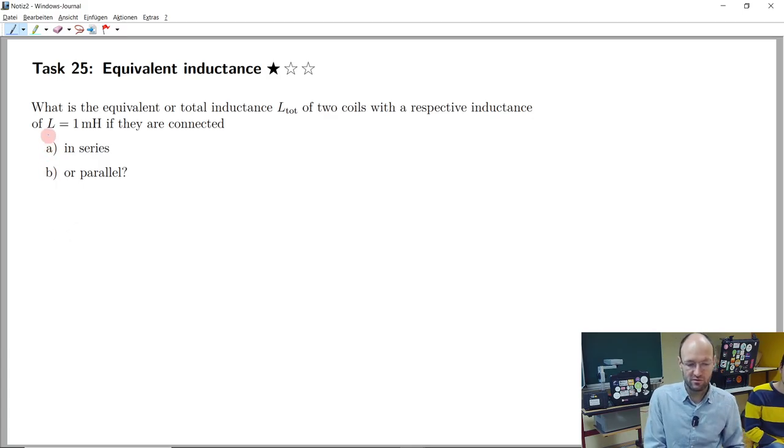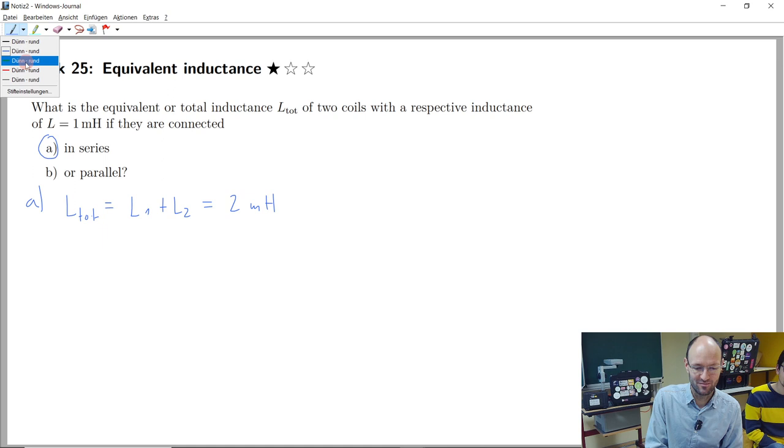What do you suggest, how do we calculate this total inductance in subtask A if the two coils are connected in series? It's just the sum of the two, so L1 plus L2, and if we have 1 mH and 1 mH connected then we should get 2 mH. Okay, so that's it, as I said, simple task.